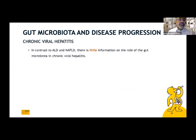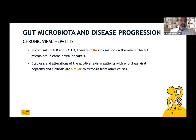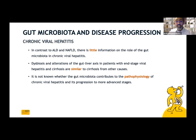In contrast to alcoholic liver disease and NAFLD, we don't have much data about the role of gut microbiota in chronic viral hepatitis. Dysbiosis and alterations of the gut-liver axis in patients with end-stage viral hepatitis and cirrhosis are similar to cirrhosis from any other cause. It is not known whether the gut microbiota contributes to the pathophysiology of chronic viral hepatitis and its progression to more advanced disease.